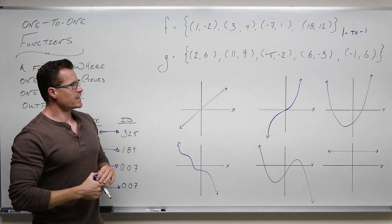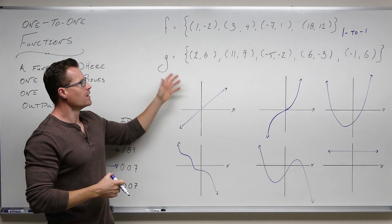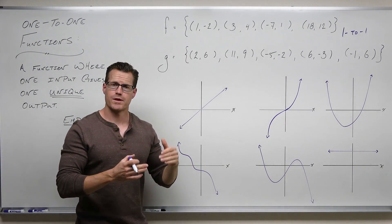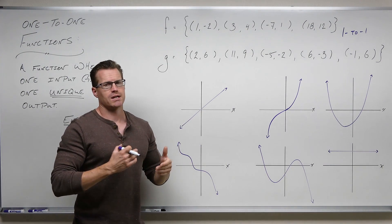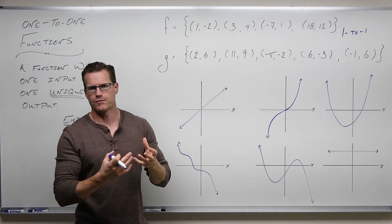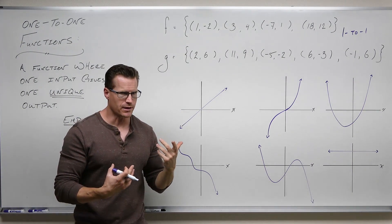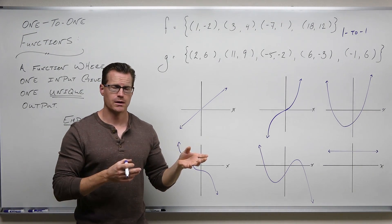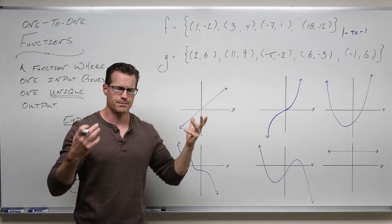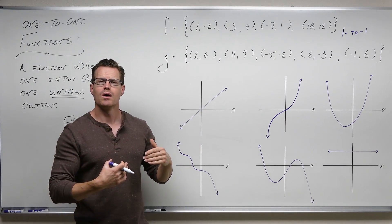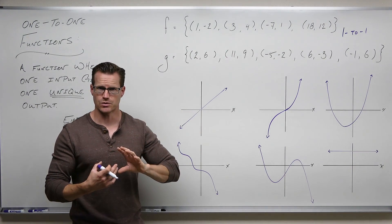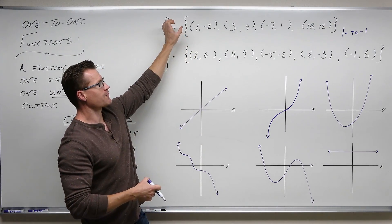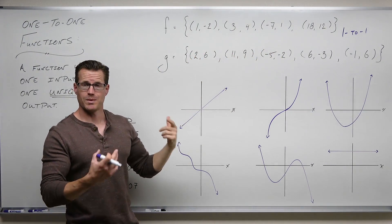Now let's look at G. Our inputs are 2, 11, negative 5, 6, and negative 1 — none are repeated, so G represents a function. We need to classify it: is it one-to-one? With one-to-one functions, I can find an inverse. Inverses are the only way mathematically that we have to undo things — subtraction undoes addition, division undoes multiplication, square root undoes a power of 2, and logarithms undo exponentials. Exponentials are a one-to-one function and therefore have an inverse. So, is F going to have an inverse? Yes, because it's one-to-one. Is G going to have an inverse? We're about to find that out.